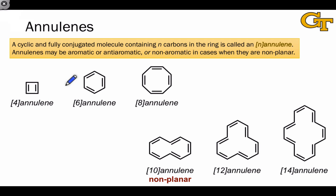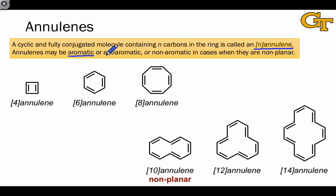So far we've been talking about cyclic, fully conjugated hydrocarbons with alternating double and single bonds. There is a term invented to refer to these: they're called annulenes. An annulene containing N carbons within its ring is called an [N]-annulene, with N in brackets indicating the ring size. Depending on what criteria of aromaticity they satisfy or don't satisfy, annulenes may be aromatic, anti-aromatic, or non-aromatic in cases when they're non-planar, which occurs due to steric hindrance or to avoid anti-aromaticity.